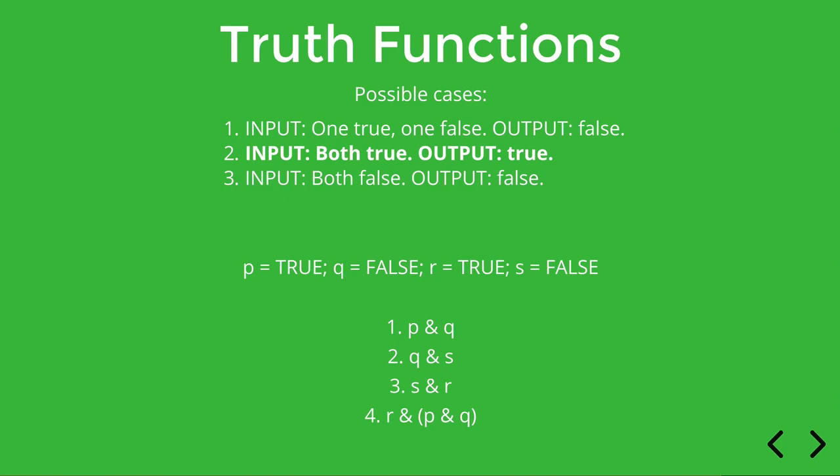So what this shows us is the truth value of complex sentences depends only on the truth values of its sentential parts. It doesn't matter what the component sentences are about, it just matters whether they're true or false, and then we can use that information to determine whether the conjunction is true or false.